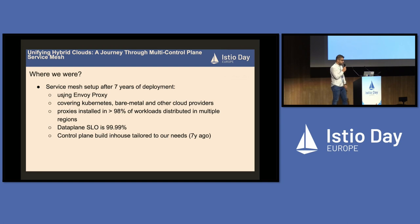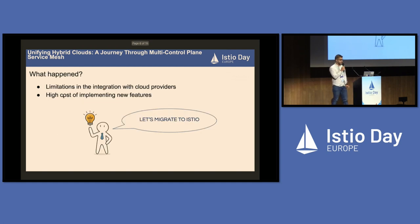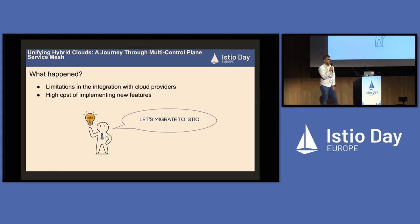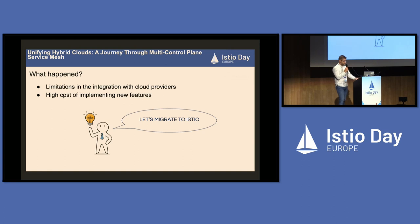Our control plane was built in-house and tailored to our needs seven years ago, and we are now figuring out all the caveats. The limitations we have now include limited integration with some cloud providers and a high cost of implementing new features, because we need to build everything from scratch. So we started evaluating Istio since version 0.2, and when it reached version 1.3 we evaluated it again and it would cover our needs.